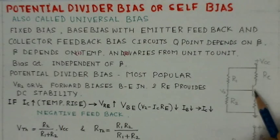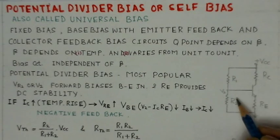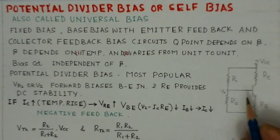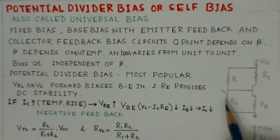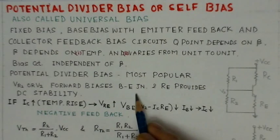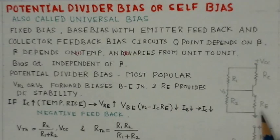In the potential divider bias arrangement, R1 and R2 are the two resistances that work like a potential divider — that is why it is named the potential divider bias. This potential divider part forms the input bias network for the transistor.